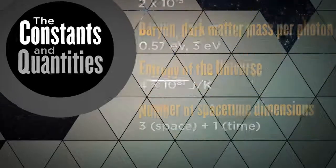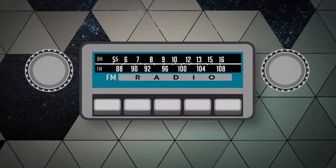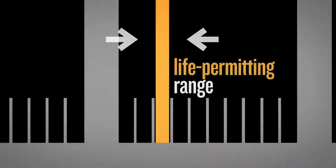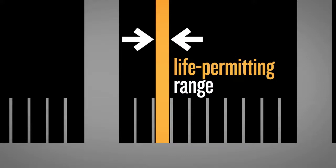Scientists have come to the shocking realization that each of these numbers has been carefully dialed to an astonishingly precise value, a value that falls within an exceedingly narrow, life-permitting range. If any one of these numbers were altered by even a hair's breadth, no physical interactive life of any kind could exist anywhere.